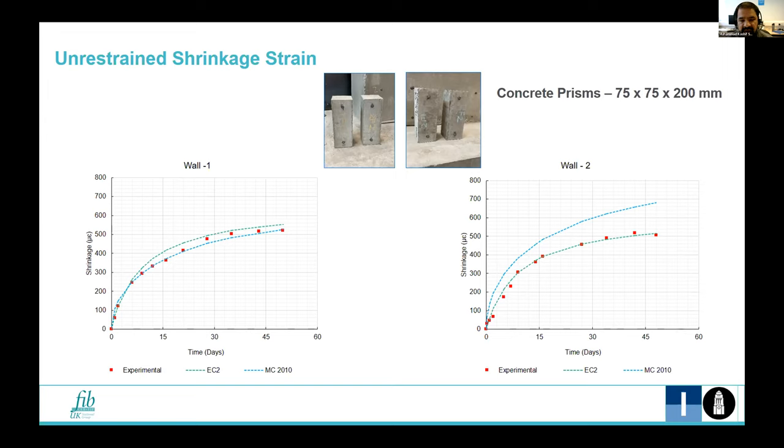The shrinkage profiles obtained from these prisms are compared to the models available for shrinkage determination in various codes. The model which closely matches with the experimentally obtained shrinkage profile is then employed for determining the free shrinkage, for calculating the free shrinkage for the larger members.